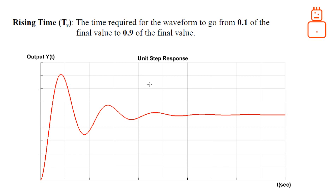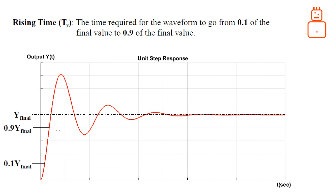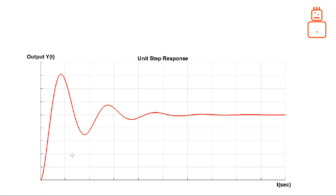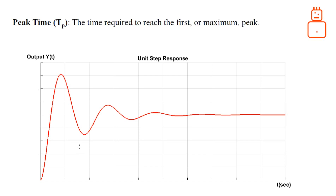So if this is the final value of the system, we take 10% and 90% of the final value. The time that the signal takes to go from 10% to 90% of the final value of the system is called the rise time, or T_R.